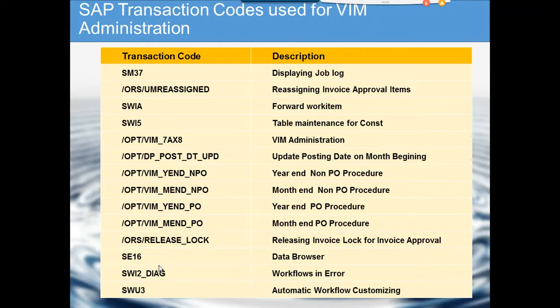The next transaction code is the Data Browser, SE16. There are some important tables you need to be familiar with, because it's easier to look up information directly in SE16 rather than going through all the transaction codes one by one.